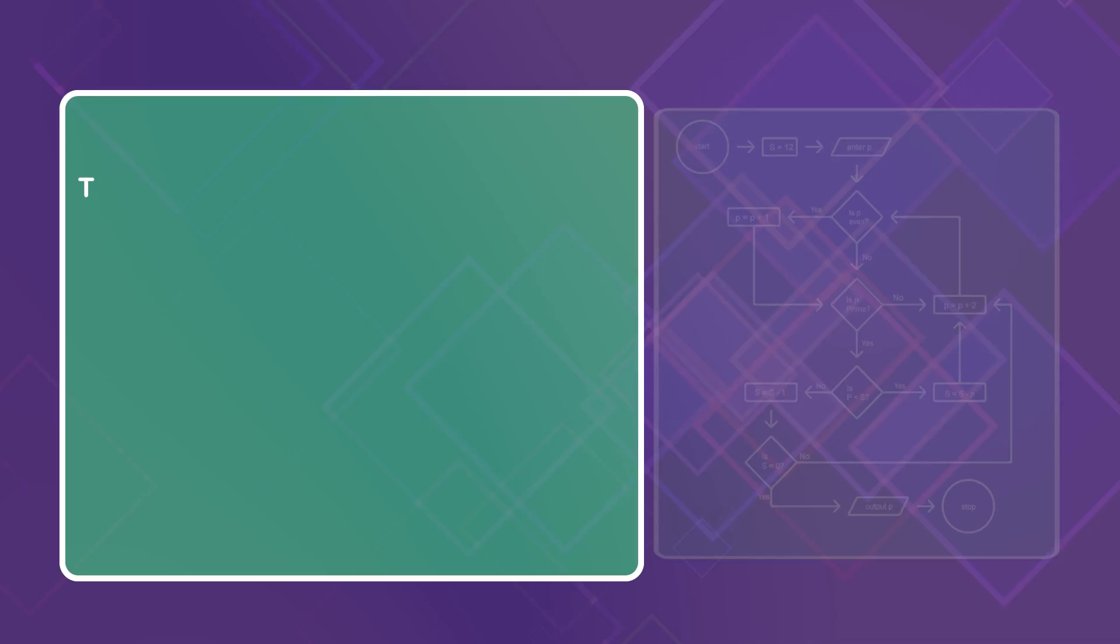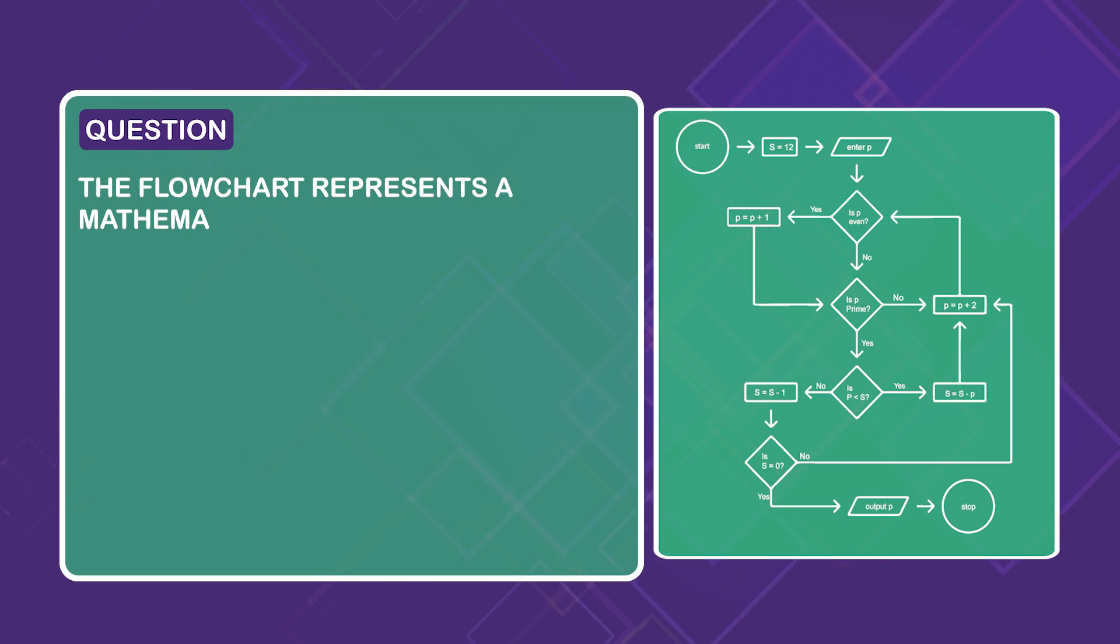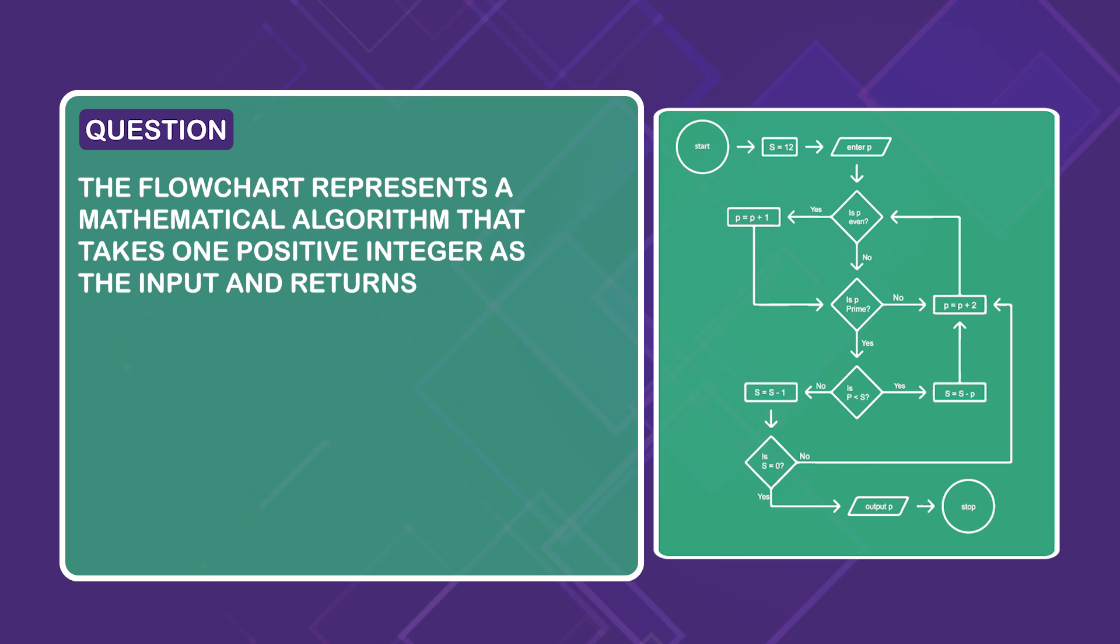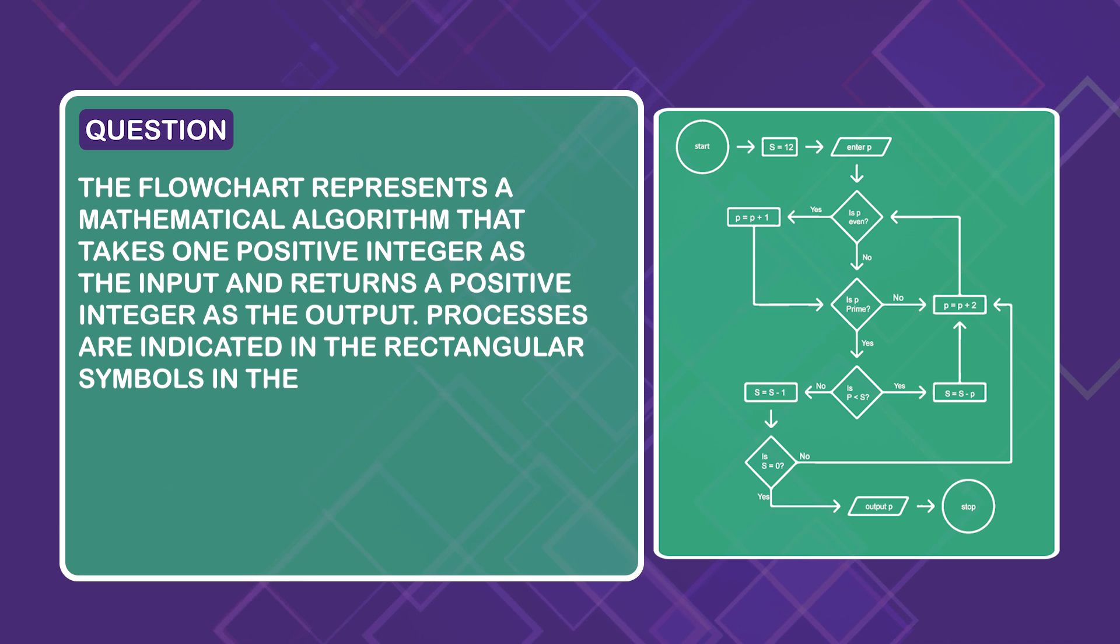Then keep watching to see if you got the answer right. Here is the question. The flowchart represents a mathematical algorithm that takes one positive integer as the input and returns a positive integer as the output. Processes are indicated in the rectangular symbols in the flowchart.